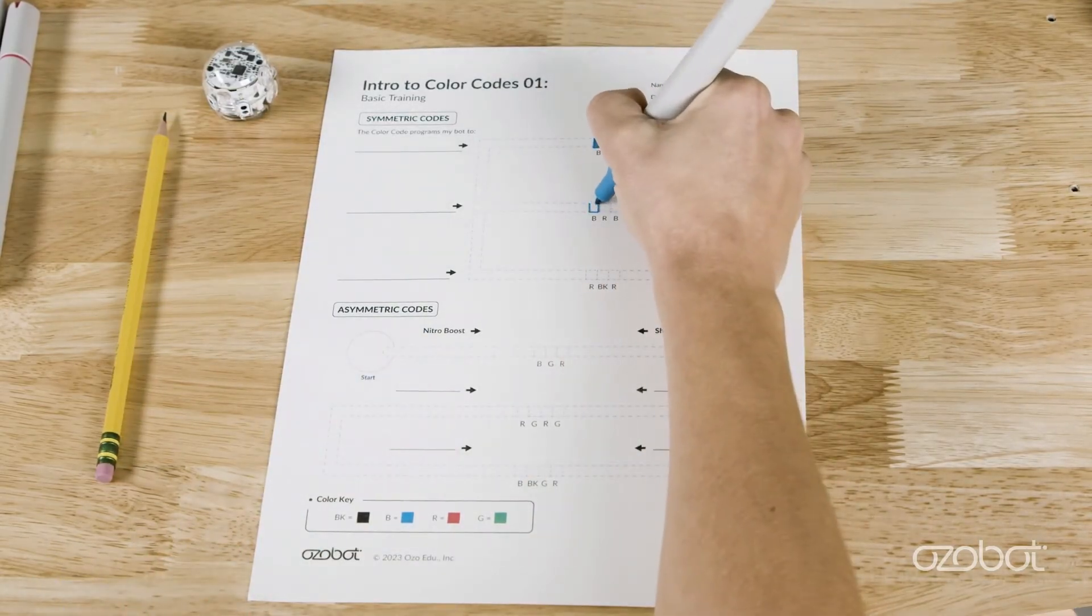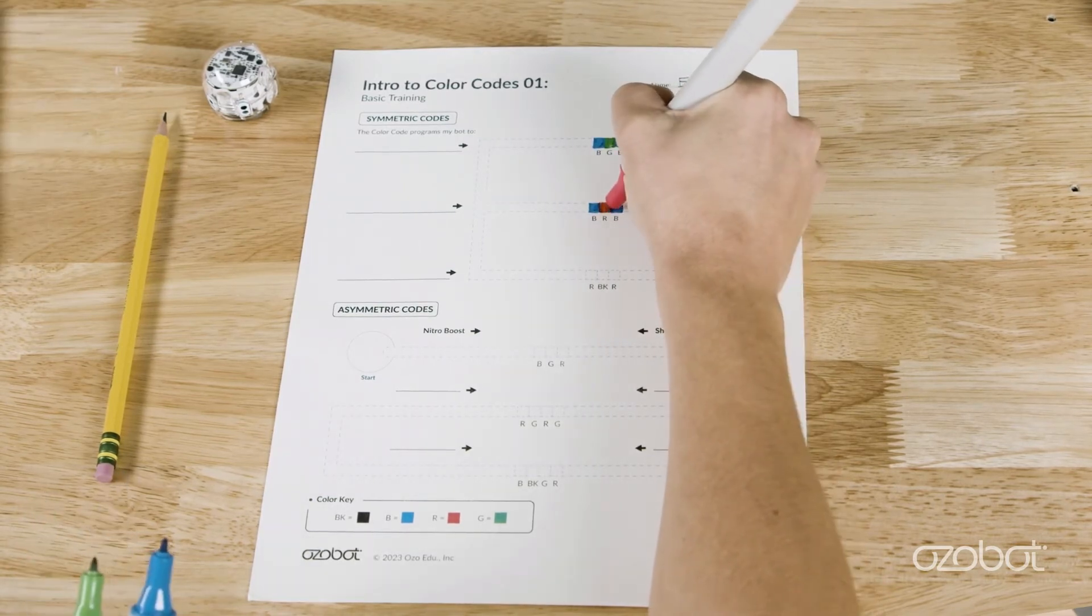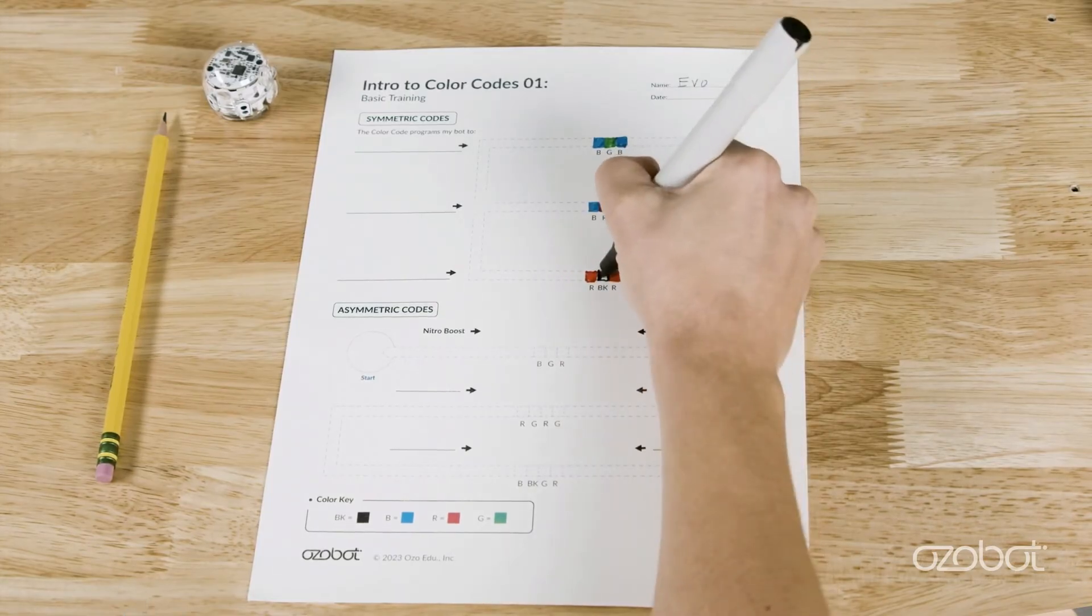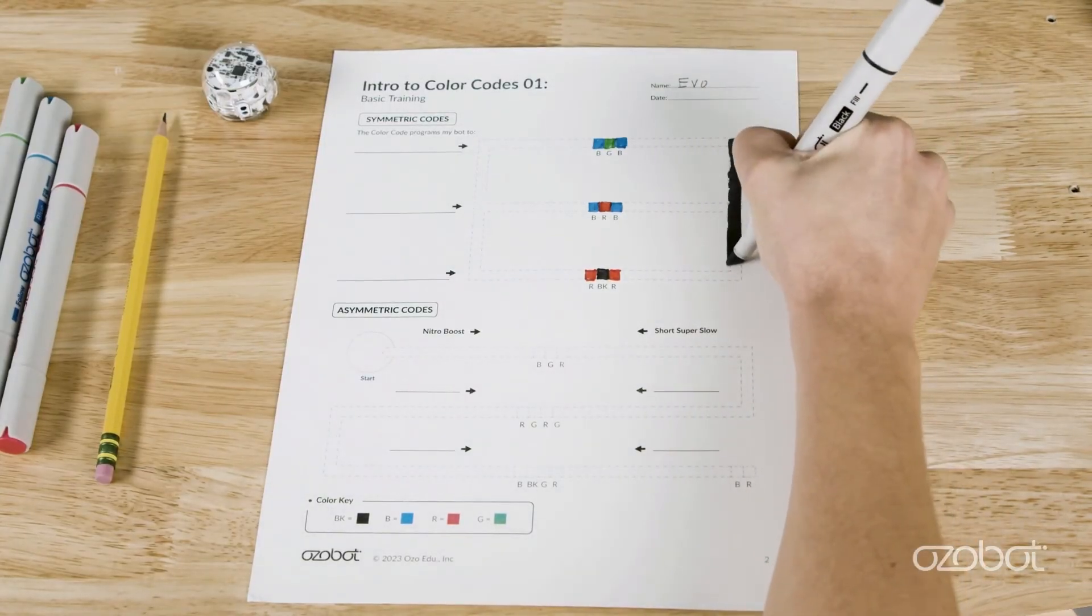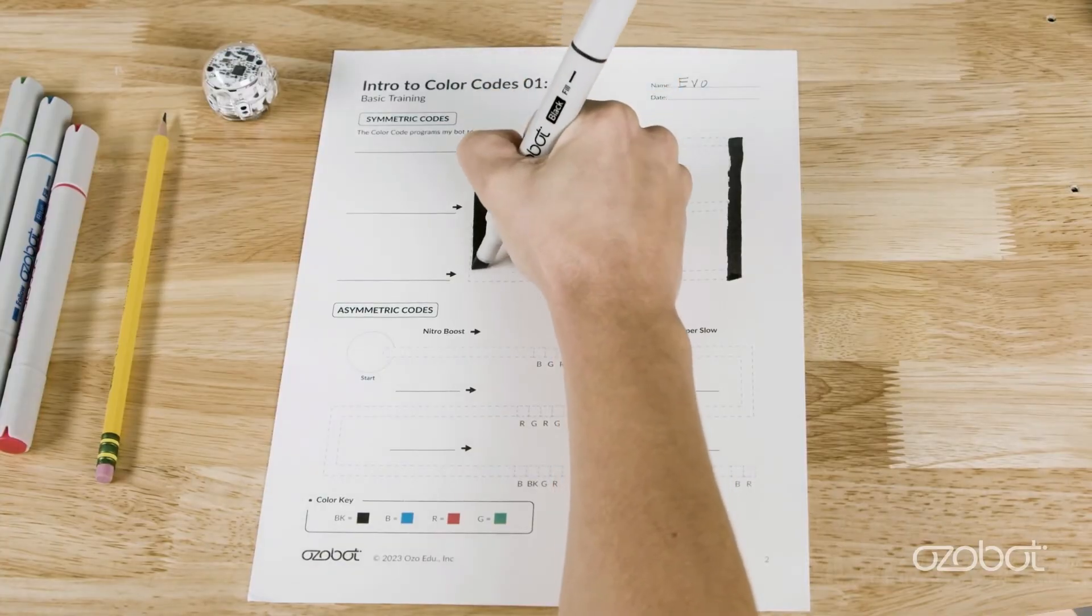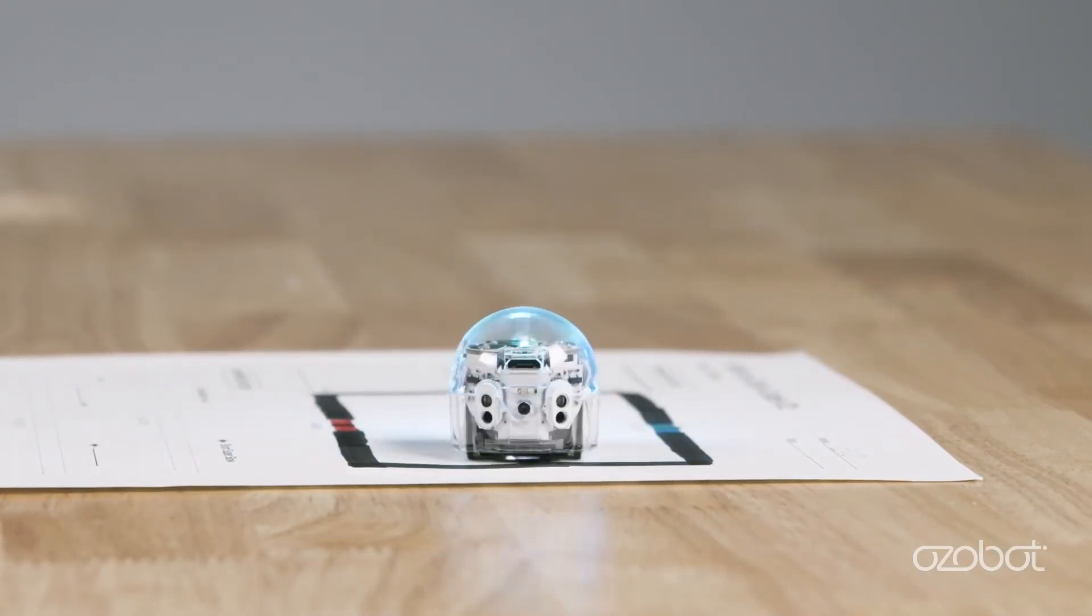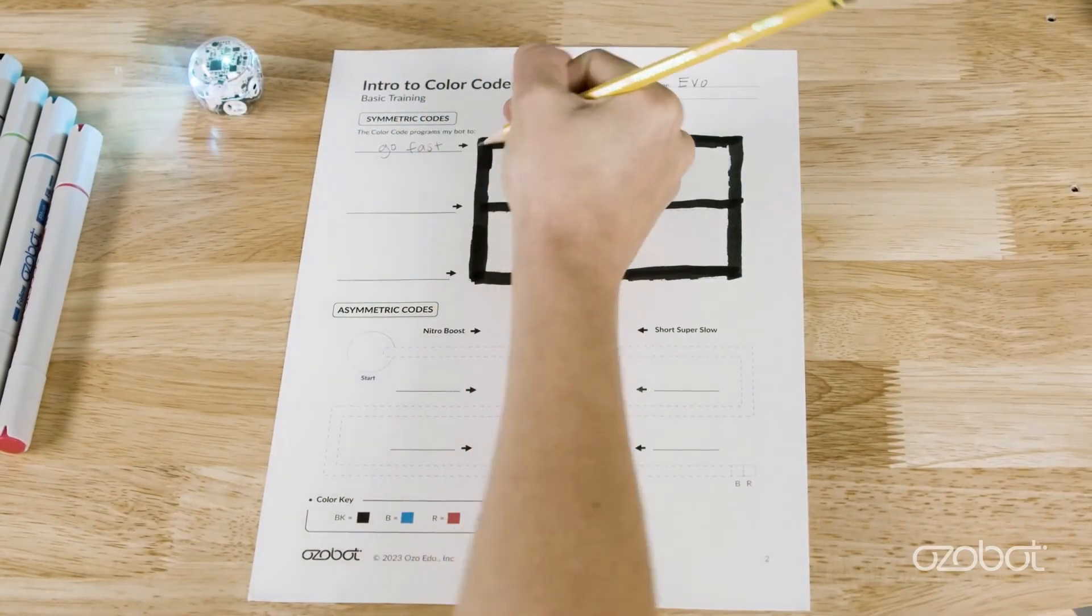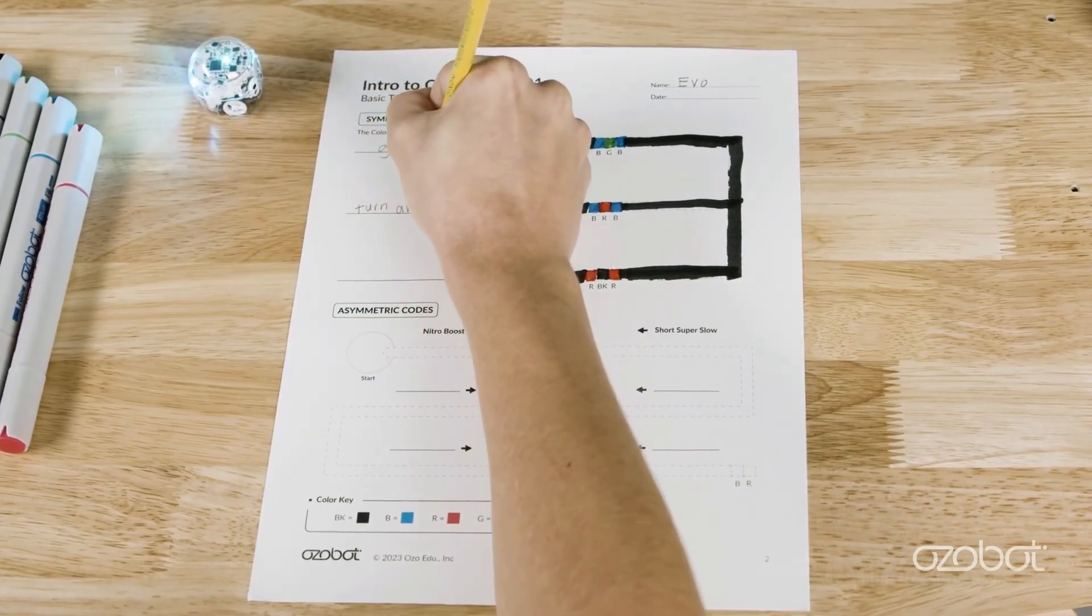The next line down has three boxes for another color code to fill in with blue red blue. The third line down has three boxes for the color code red black red. Fill in these three color codes then fill in the line that connects them with black marker. Then place Ozobot anywhere on the black line and watch what these three color codes program your bot to do. Then write on the blank next to the lines what action the bot did after passing the color code. What did each of the color codes program your bot to do? Fill in the blank next to the line.